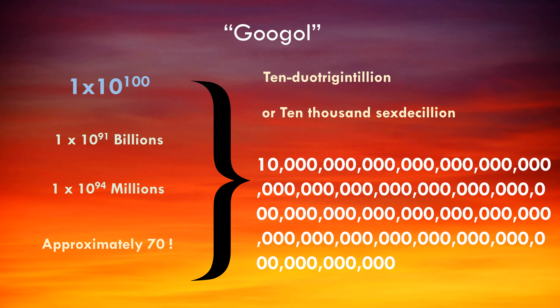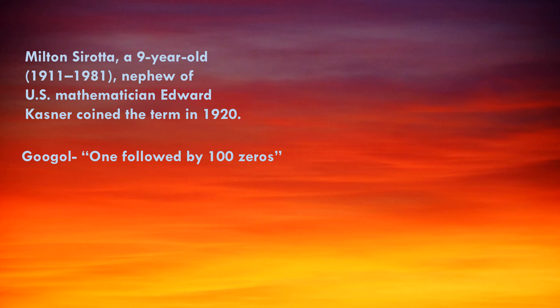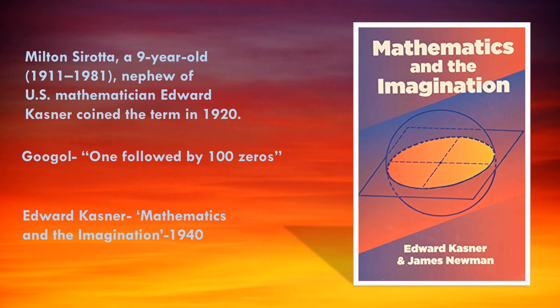The term was coined by a 9-year-old kid called Milton Sirota, nephew of US mathematician Edward Kastner, in 1920, who was asked to think of a name for a very big number — namely one with 100 zeros after it. Kastner popularized the term Googol in his 1940 book, Mathematics and Imagination.